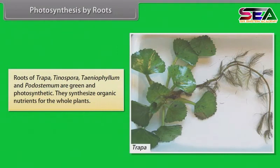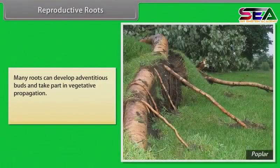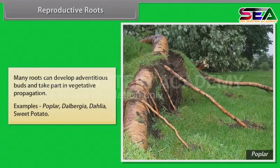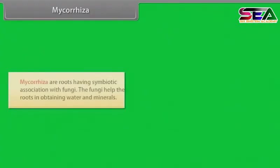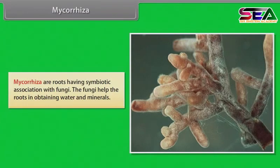Release of oxygen: roots of rice and some other amphibious plants release oxygen that overcomes the reducing environment for functioning of various microorganisms and availability of minerals. Photosynthesis by roots: roots of Trapa, Tinospora, Taeniophyllum and Podostemum are green and photosynthetic; they synthesize organic nutrients for the whole plant. Reproductive roots: many roots can develop adventitious buds and take part in vegetative propagation. Examples: Populus, Dalbergia, Dahlia, sweet potato. Protection by roots: root thorns and root spines present in certain plants are protective devices against animals and excessive loss of water. Mycorrhiza: roots having symbiotic association with fungi; the fungi help the roots in obtaining water and minerals.